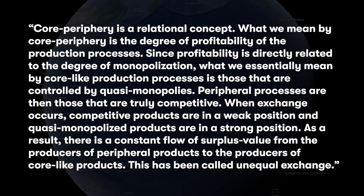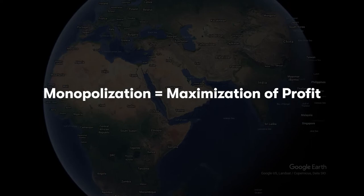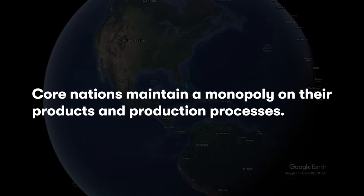This has been called unequal exchange. The key element distinguishing core-like from peripheral processes is the degree to which they are monopolized and therefore profitable. So the key in determining whether a nation and its products are core or peripheral is how much the nation maintains a monopoly on the production of those products.